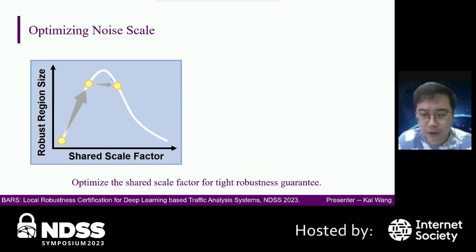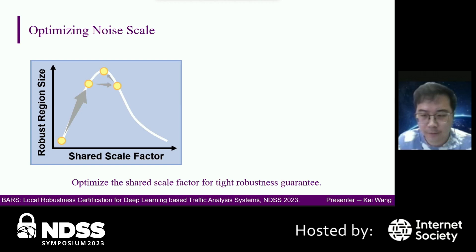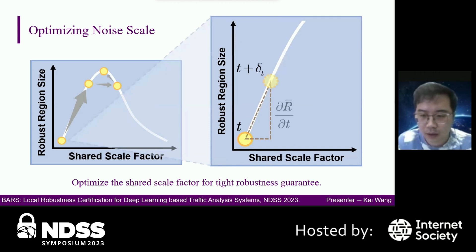The third module of the training stage is optimizing the noise scale by searching the shared scale factor iteratively. Because the main robustness radius is not differentiable to the scale factor, in each iteration we add a perturbation to the current scale factor and estimate its gradient. Then we update the scale factor based on its gradient.